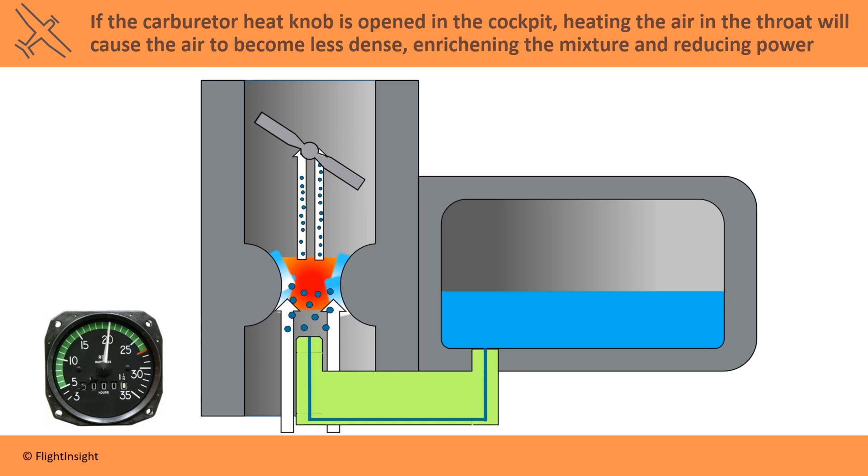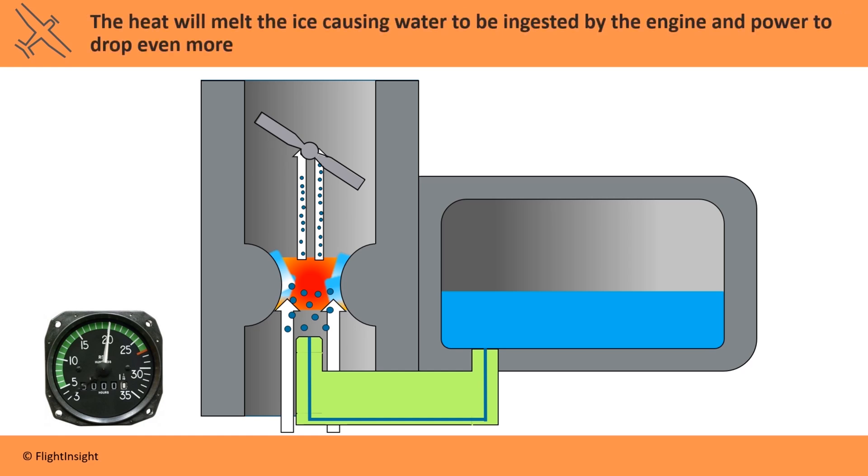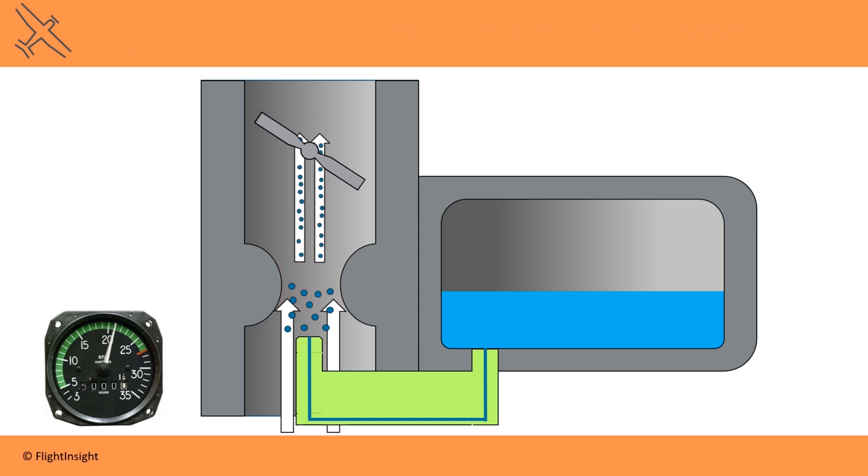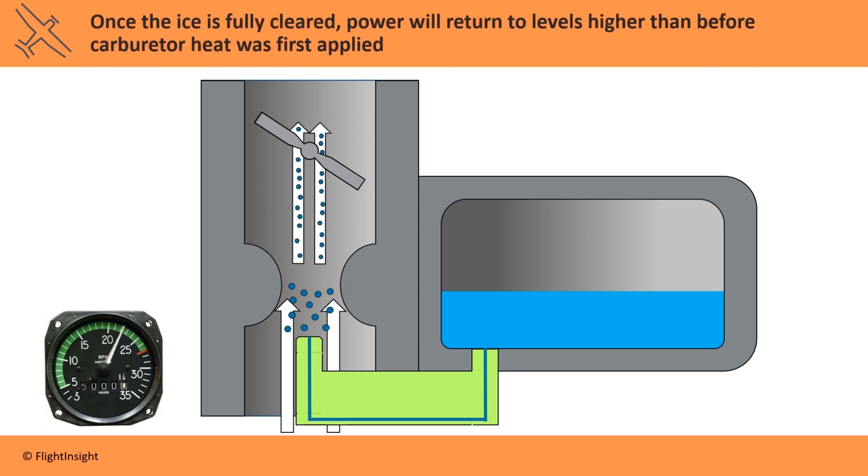The heat will melt the ice, causing water to be ingested by the engine and power to drop even more. Once the ice is fully cleared, power will return to levels higher than before carburetor heat was first applied.